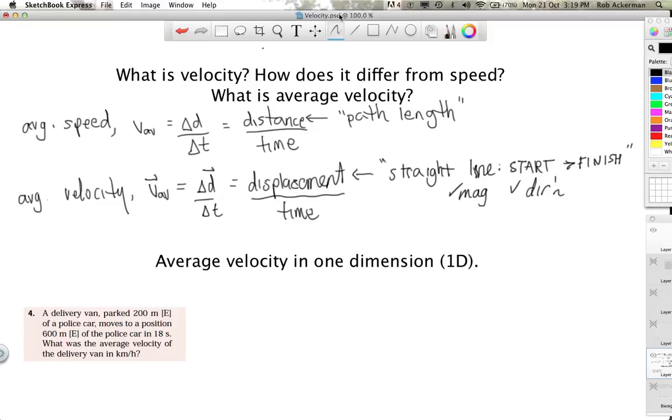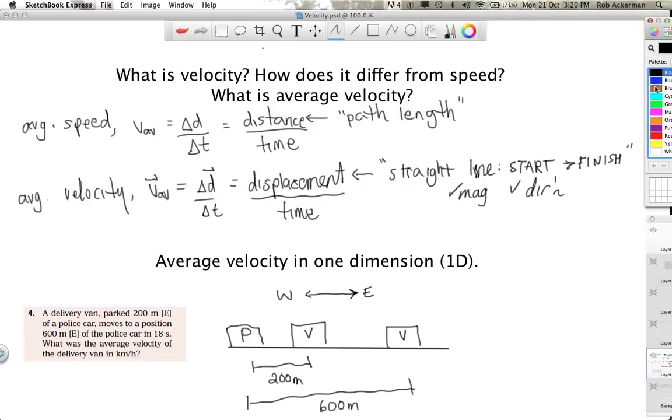The first thing we're going to do is draw this out. I'm going to imagine a road here running in the east-west direction, so maybe we'll call this direction east and that direction is west. Now there's supposed to be a police car, which I'm going to label P, and there's supposed to be a van which starts off 200 meters east of the police car. So here's the van V, and this initial starting position is 200 meters. Now the van ends up 18 seconds later at a position that we describe as 600 meters to the east. So it's clear that the van has moved.